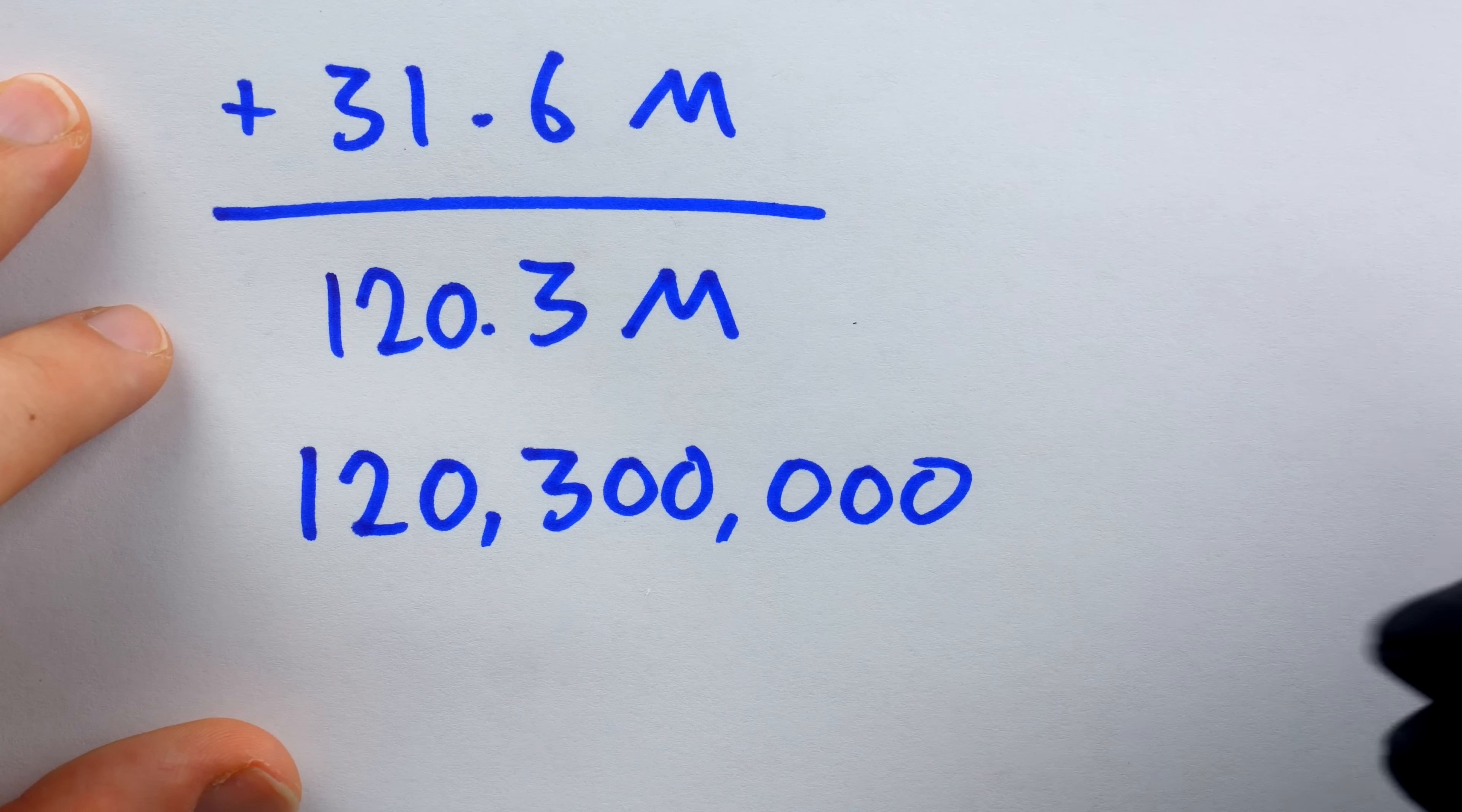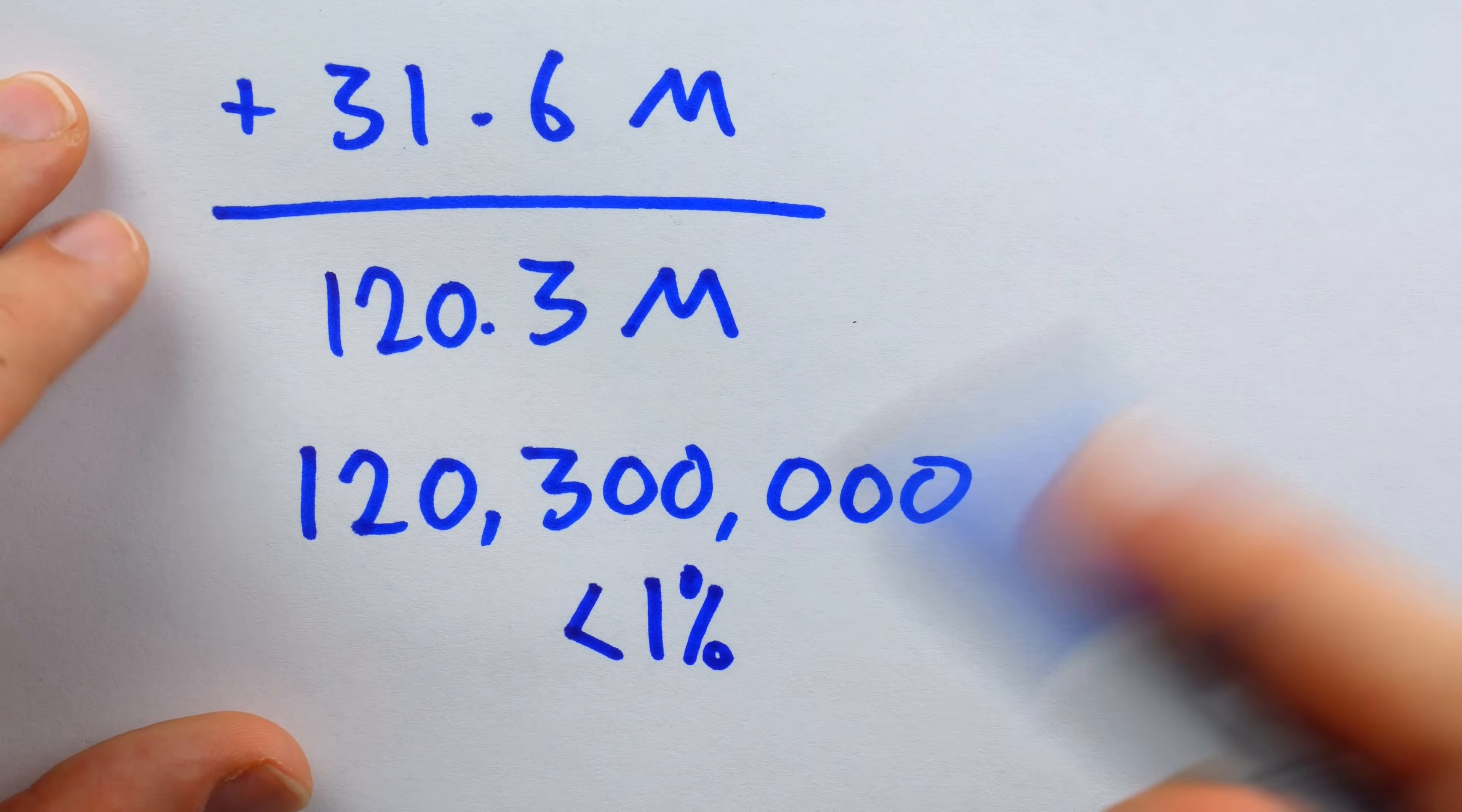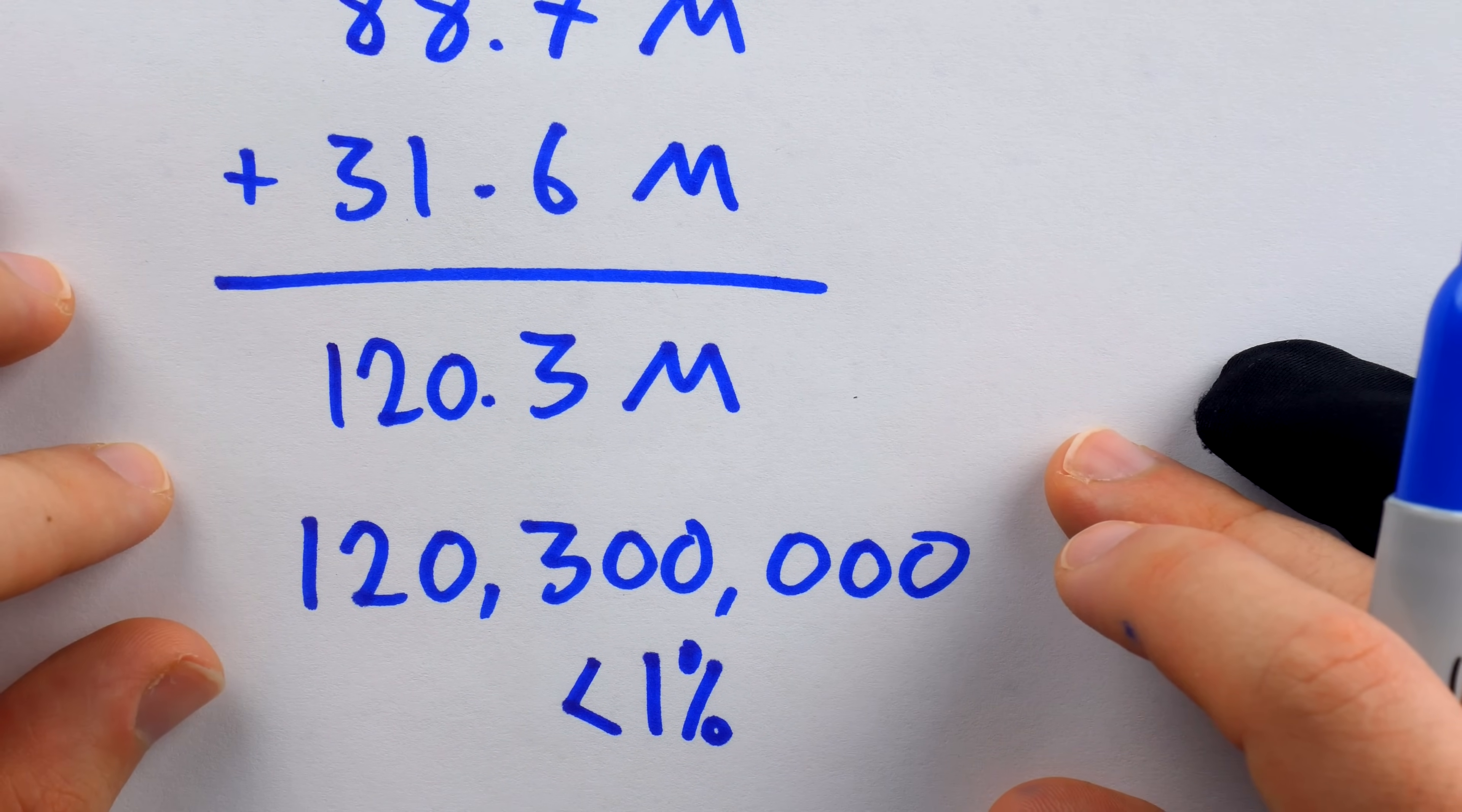Again, this technique is going to get us the correct answer within 1%. So less than 1% error with numbers of this scale, the error of, you know, less than 50,000 in this particular problem. That's great. This is accurate. It's easy. Estimation is definitely a skill worth learning.